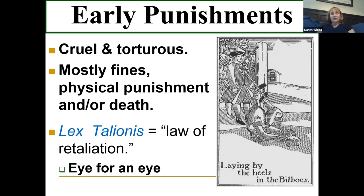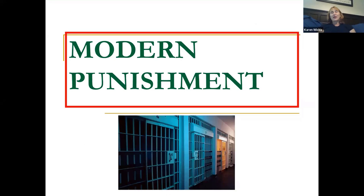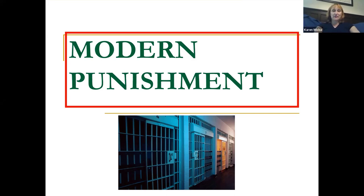The basis for early punishment was the concept called lex talionis — the law of retaliation, or an eye for an eye. If you committed a serious crime, you would be tortured and physically punished as retaliation. Drawing and quartering, hanging, cutting off limbs, tarring and feathering, and putting people in stocks — these were the cruel, torturous early forms of punishment. We've really changed our ideas about punishment in more modern times.